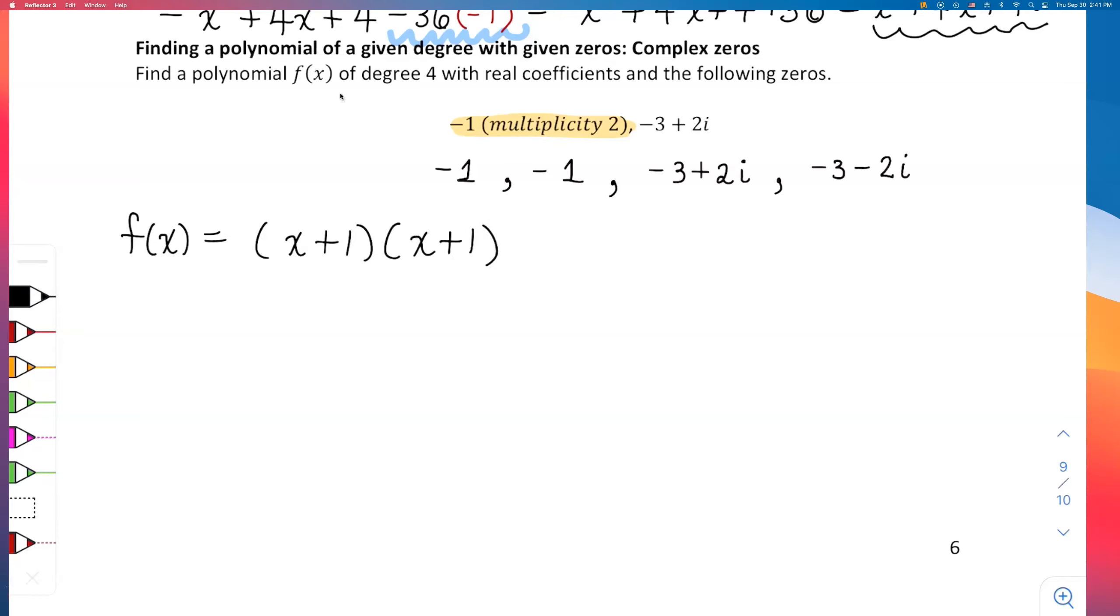Remember how to write these ones? I have to put these two in a binomial or parenthesis and do x minus (-3 + 2i), that's the third factor, and the fourth factor is going to be x minus (-3 - 2i). They didn't really say simplify all the way, so did I find a polynomial f(x) of degree 4? I did, it's just in factored form, written as a product of four linear factors.